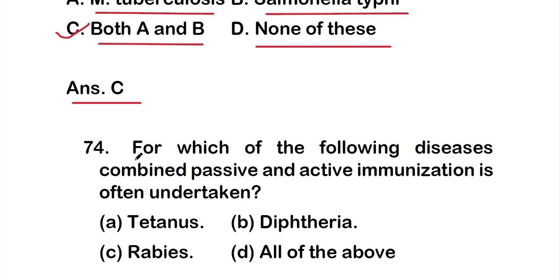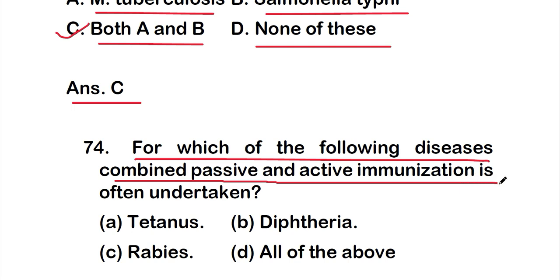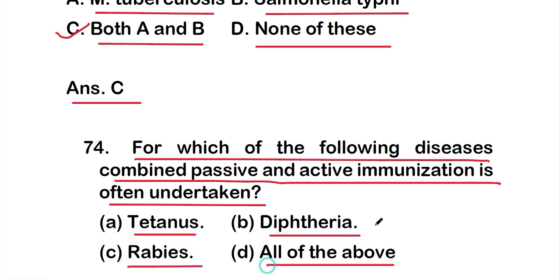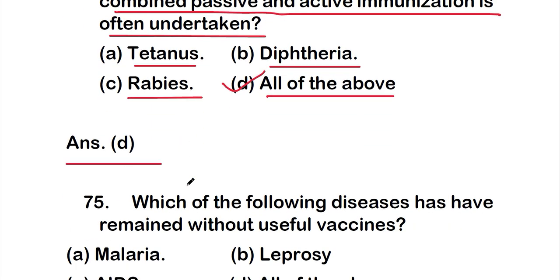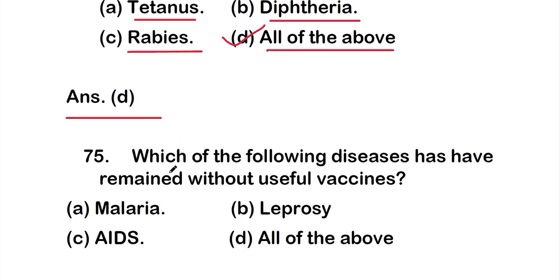Question 74: For which of the following diseases is combined passive and active immunization often undertaken? Options: A: tetanus, B: diphtheria, C: rabies, D: all of them. The right answer is option D — all of the above. Combined passive and active immunization is often undertaken for tetanus, diphtheria, and rabies.